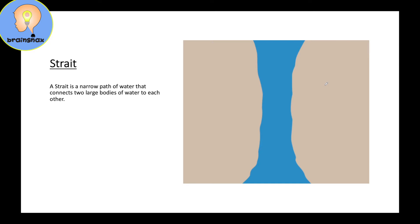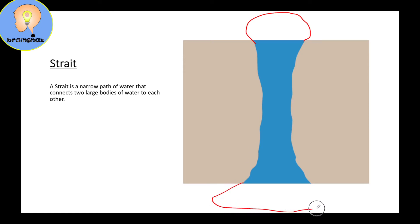This is a strait. A strait is a narrow path of water — almost like a bridge of water that connects two large bodies of water to each other. Up here there will be a very big body of water, and down here too. And this strait connects the two. A very good example is the Taiwan Strait, right between Taiwan and China.